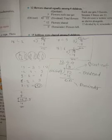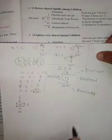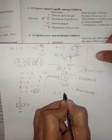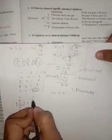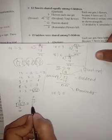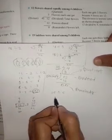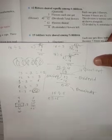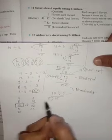Now the next problem: 15 lettuce were shared among five children. So it means 15 divided by 5. Let's recite the five times table: five ones are five, five twos are ten, five threes are fifteen, five fours are twenty, five fives are twenty-five. Now let's write 15 in the division symbol.